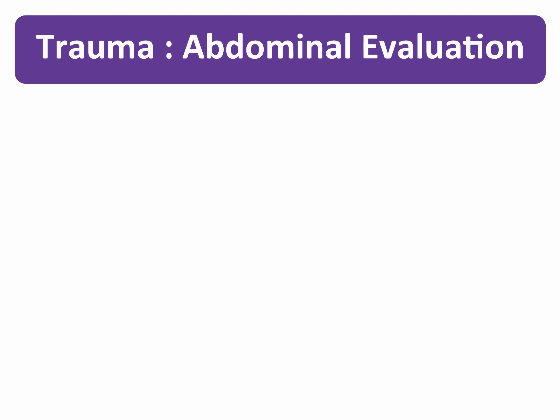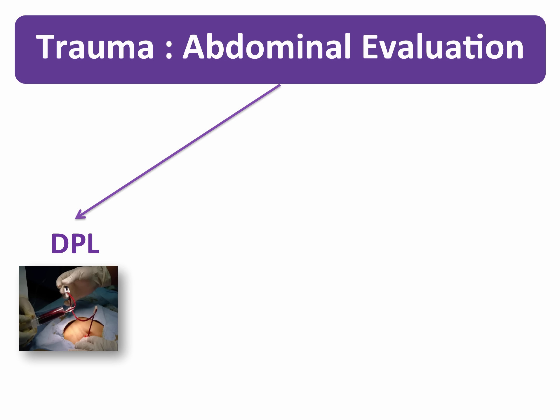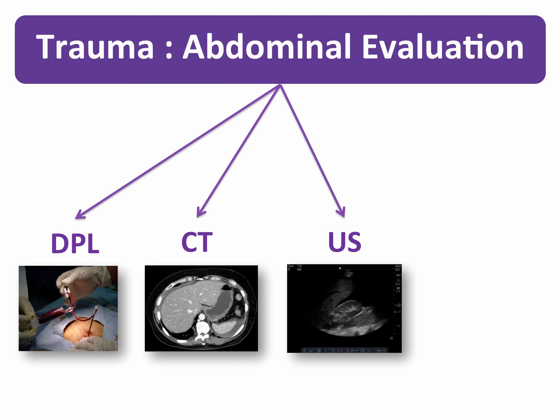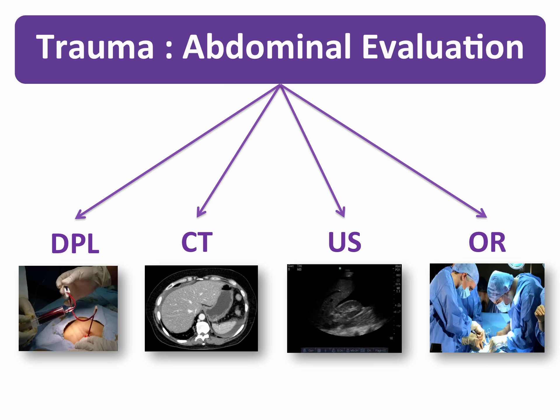When a patient presents with blunt or penetrating trauma or unexplained hypotension and a potential injury to the abdomen, we really have four possible options to evaluate their injuries: diagnostic peritoneal lavage or DPL, CT scanning, ultrasound, or operative exploration.